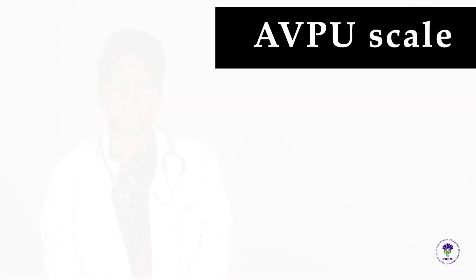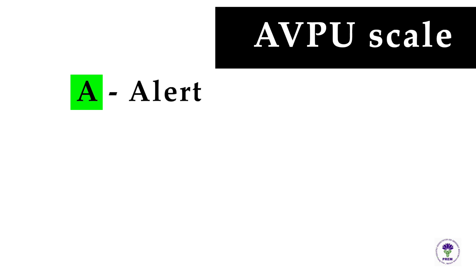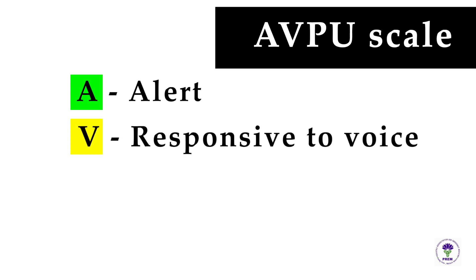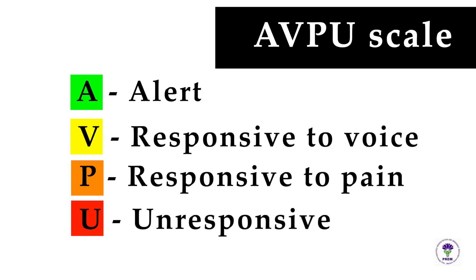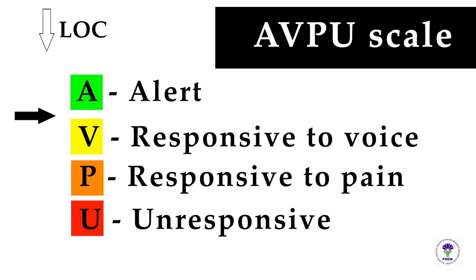The AVPU score is: A — Alert; V — responsive to Voice; P — responsive to Pain; or U — Unresponsive. A decreased level of consciousness is defined as a drop from Alert to responsive to Voice, Pain, or Unresponsive.